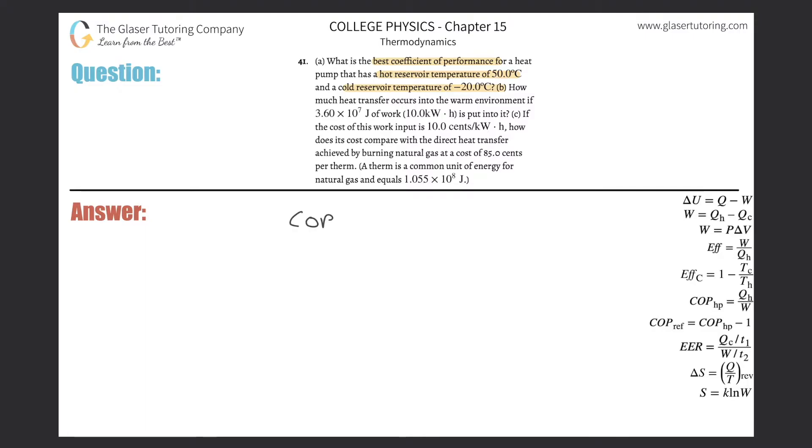The coefficient of performance here for a heat pump is basically going to be equal to one over the efficiency. If I want to find the best possible coefficient of performance, then I'm going to be using the Carnot efficiency. All right, so now I realize they told me two temperatures. They didn't tell me the efficiency, so I just have to think how to do a quick substitution, and I realize that the Carnot efficiency is related to two temperatures via that formula.